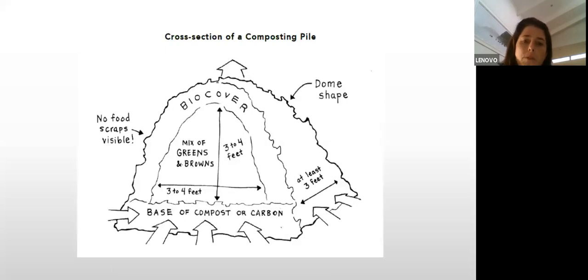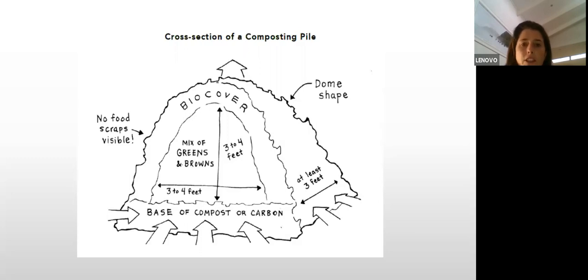For windrow composting, you put a base of carbon material at the bottom, then a mixture of green and brown material in the middle, covered with a bio-cover — which is old compost or wood chip — to make sure all food scraps are covered and odors are controlled. It's very important to make these heaps at least one cubic meter in size to ensure you get high temperatures in the middle.